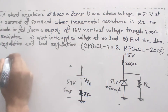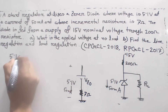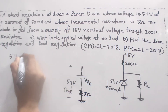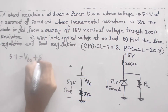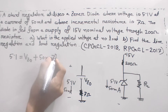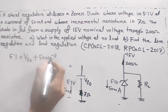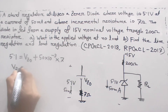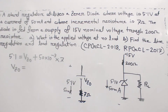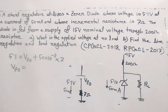5.1 volt is equal to Vz0 plus Iz times 7, where Iz is 50 milliampere. So Vz0 is equal to 5.1 minus 0.05 into 7, which gives Vz0 equal to 4.75 volt.